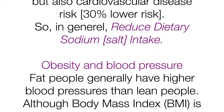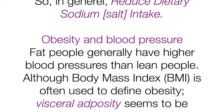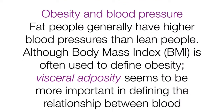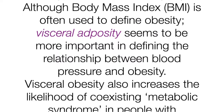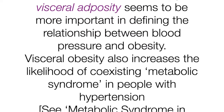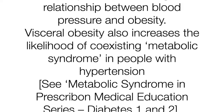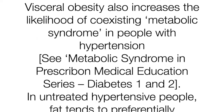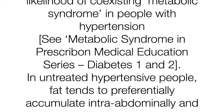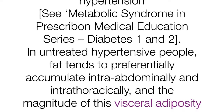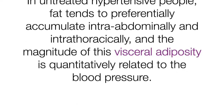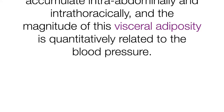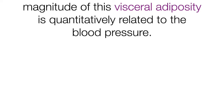Obesity and blood pressure: fat people generally have higher blood pressure than lean people. Although body mass index (BMI) is often used to define obesity, visceral adiposity seems more important in defining the relationship between blood pressure and obesity. Visceral obesity also increases the likelihood of coexisting metabolic syndrome. In untreated hypertensive people, fat tends to preferentially accumulate intra-abdominally and intra-thoracically, and the magnitude of visceral adiposity is quantitatively related to blood pressure.